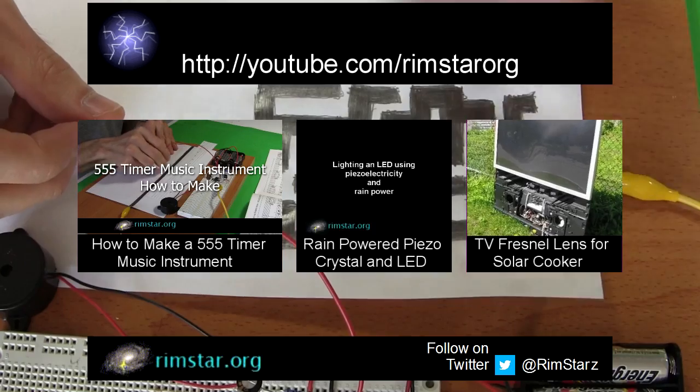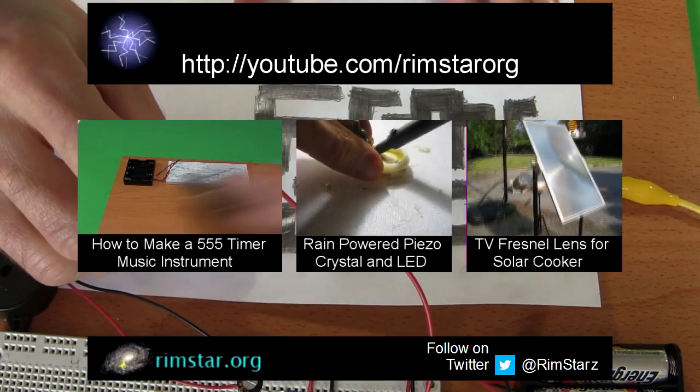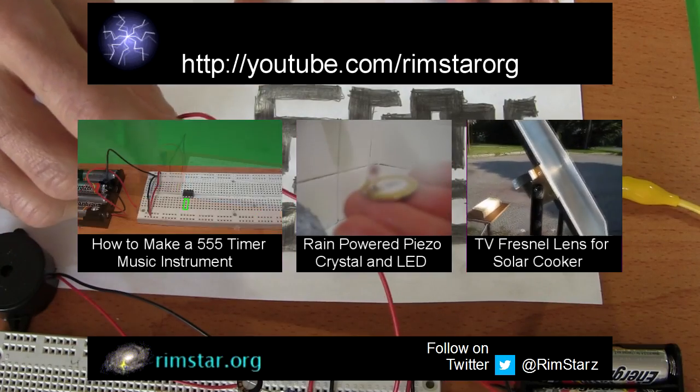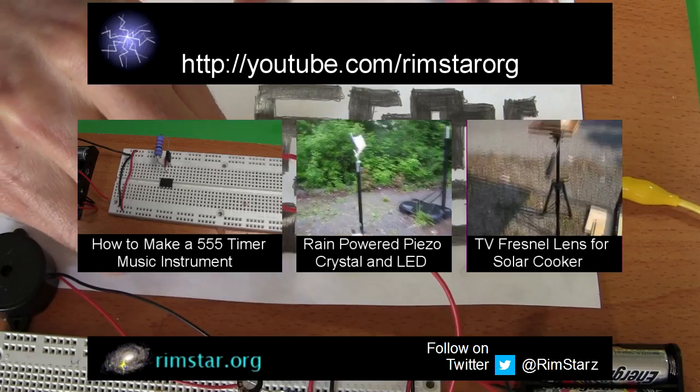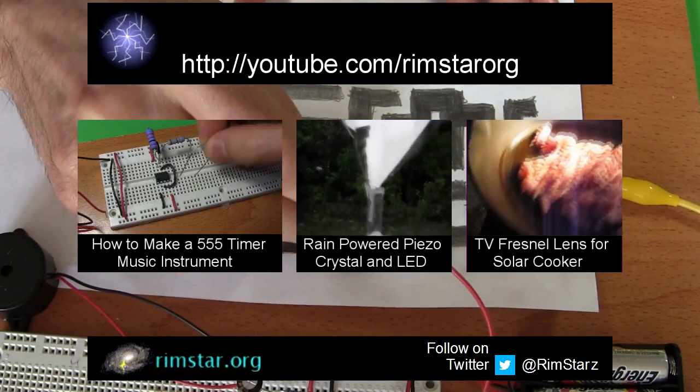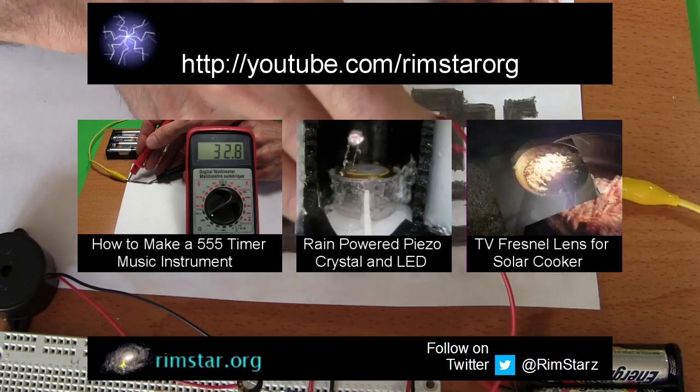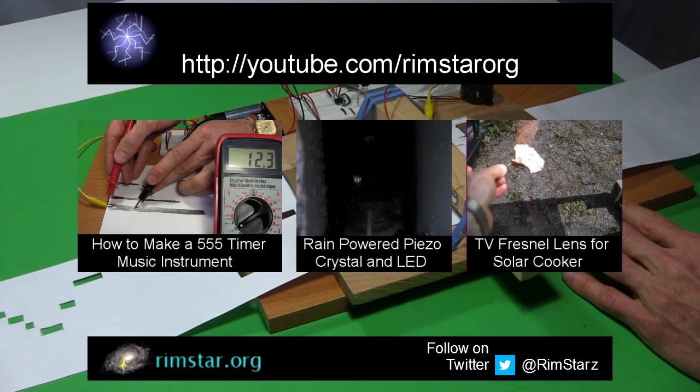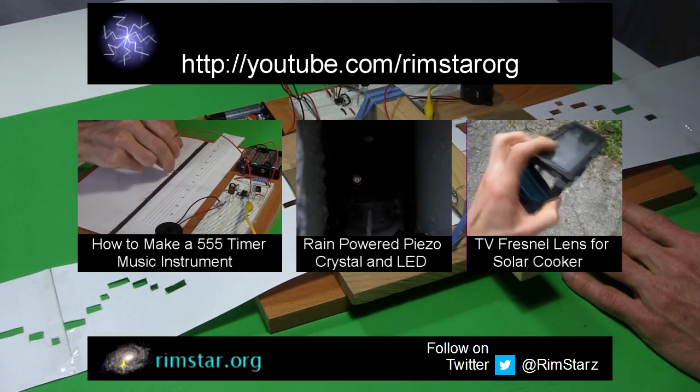Well, thanks for watching. See my YouTube channel, Rimstar Org, for more fun videos like this. That includes the first video I kept referring to, the one that shows step-by-step how to make this 555 timer circuit. Another on using rainwater to power a piezoelectric crystal and light an LED. And one on using a Fresnel lens from a rear projection TV to make a solar cooker. And don't forget to subscribe if you like these videos. For more, give a thumbs up, or leave a question or comment below. See you soon.